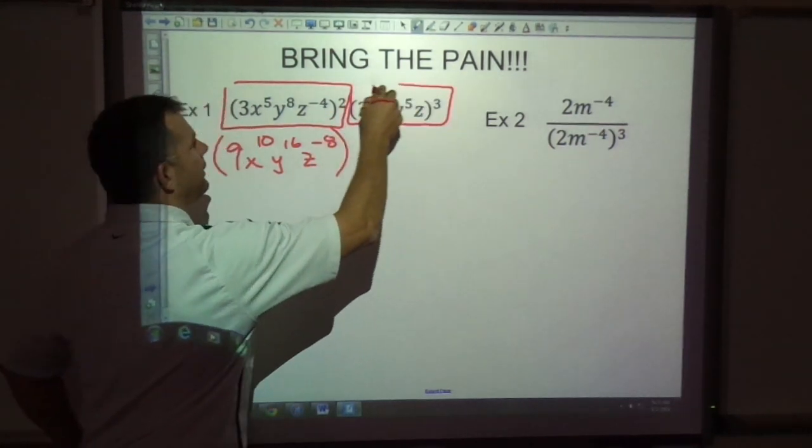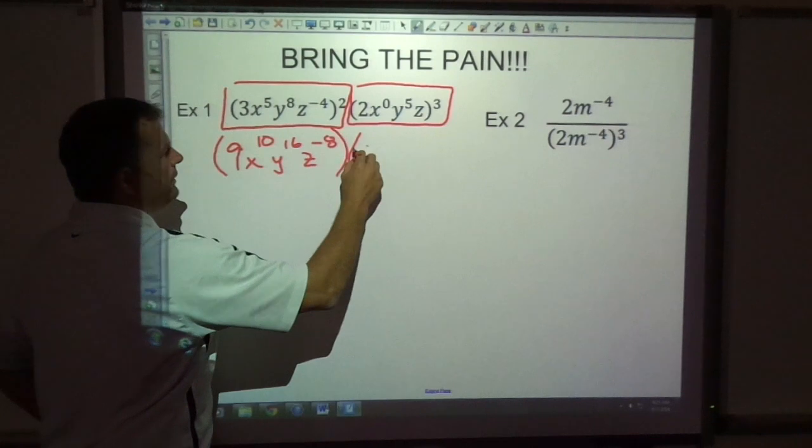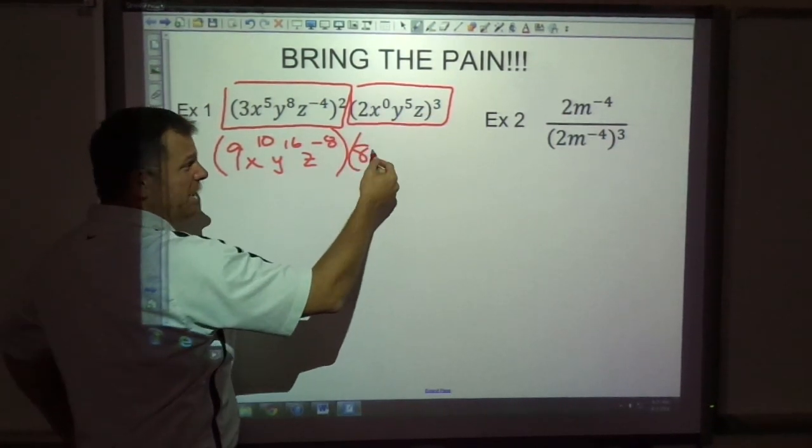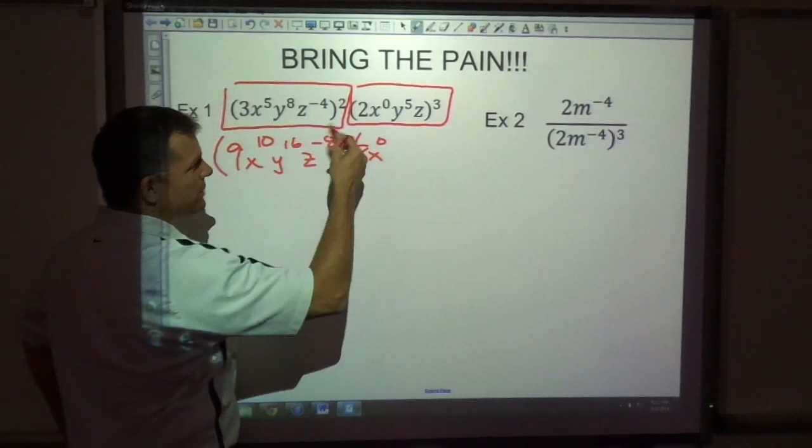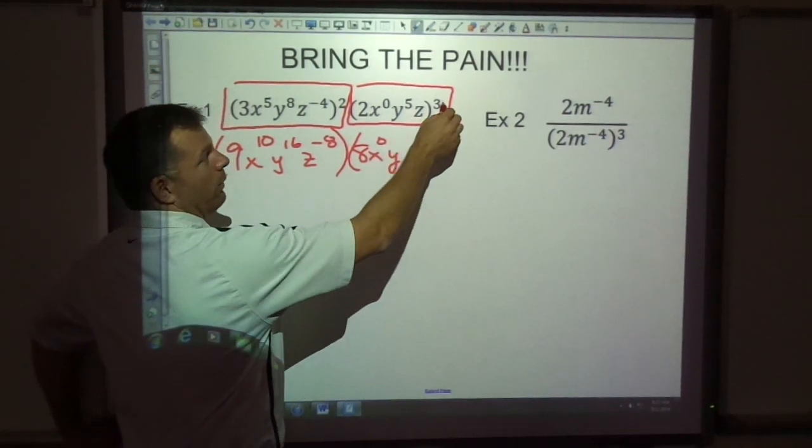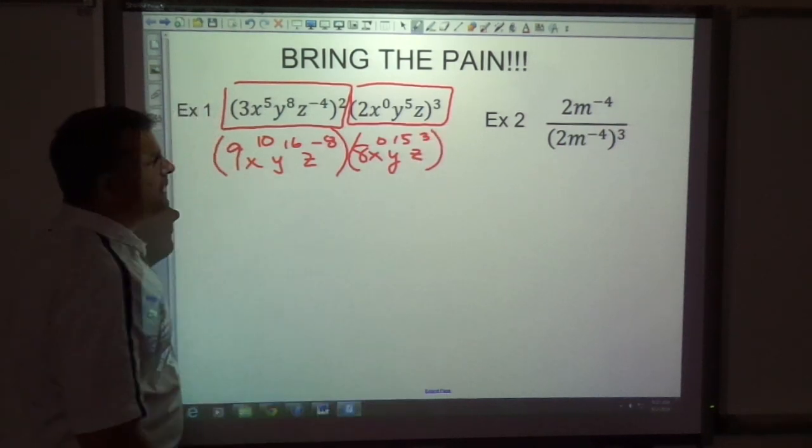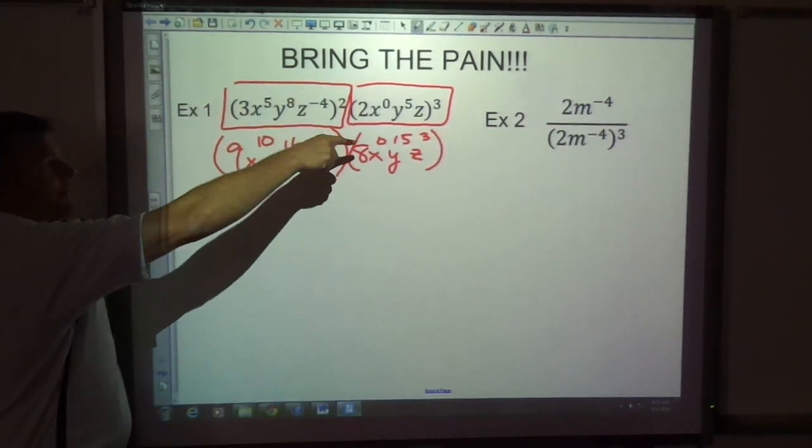This one power to power, 2 raised to the third power is 8. 0 times 3 is 0, I don't have to write it, I will anyhow just to show it doesn't really matter. Y to the 15th, z to the third. So I've done power to power, power to power.